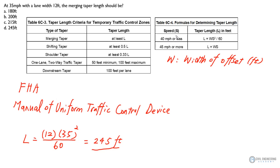So if the speed of traffic is equal to 40 miles per hour or less, then the taper length L can be calculated as W times S squared divided by 60. Here W is the width of the offset, and S is the speed. And when the speed is equal to 45 miles per hour or more, then the taper length is calculated as W times S.